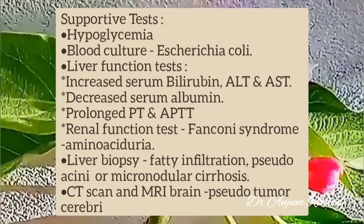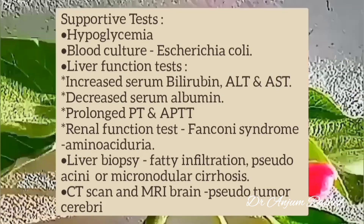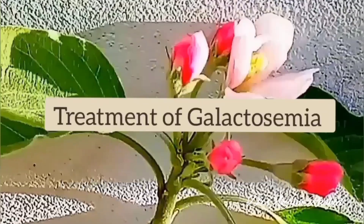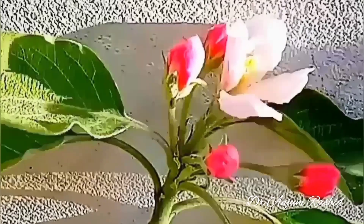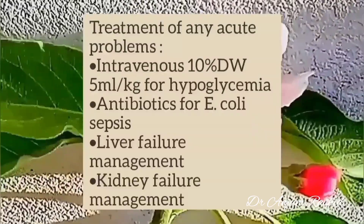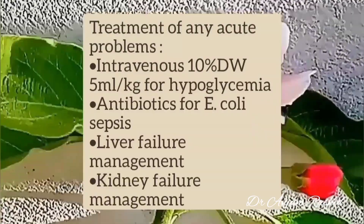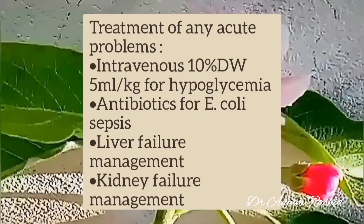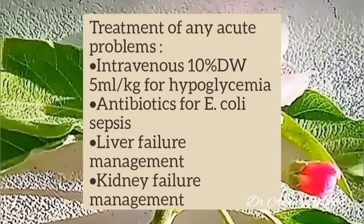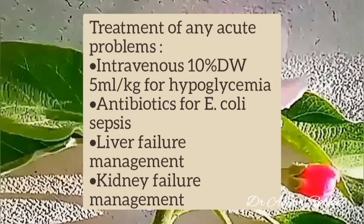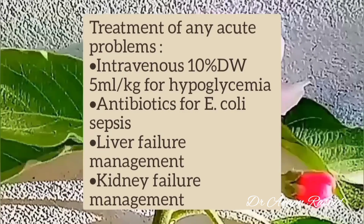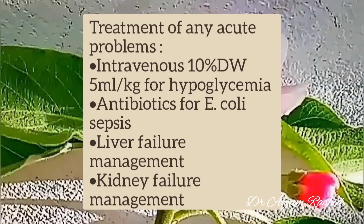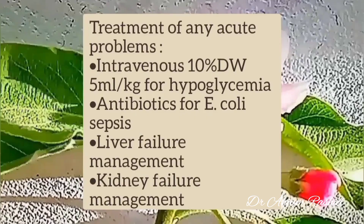CT scan and MRI of the brain may reveal pseudotumor cerebri. Treatment of Galactosemia — first, treatment of any acute problem: intravenous 10% dextrose water, 5 ml per kg for hypoglycemia; antibiotics for E. coli sepsis; liver failure management; and kidney failure management.